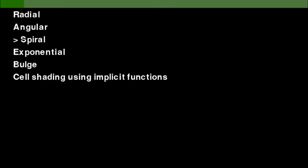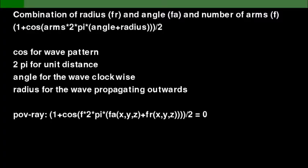Next up is the spiral function. The spiral function is a combination of these past two. I'm using these past two functions as the argument for a cosine. And if you use the cosine, which is a wave pattern, over the angle on its own, you'll get a wave clockwise around the center. And if you use the cosine over the radius, you'll get a wave that's propagating from the center, like throwing a pebble in a pond. Now if you add these two, you get a spiral.